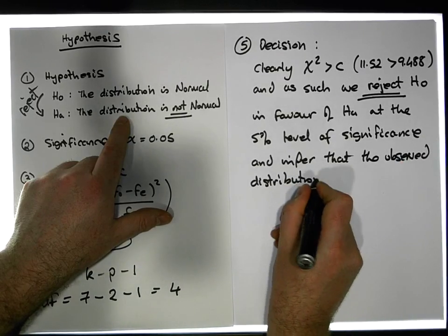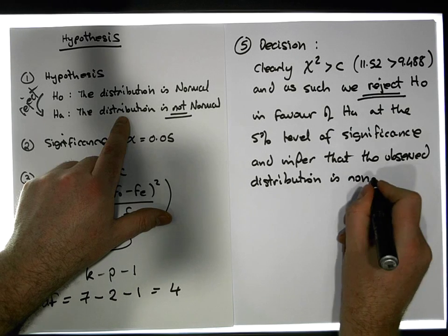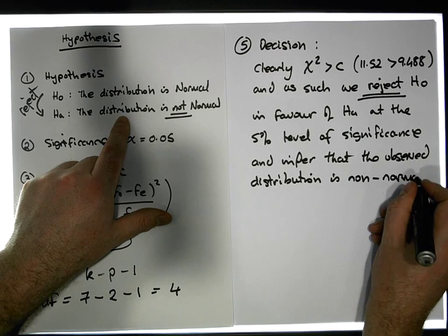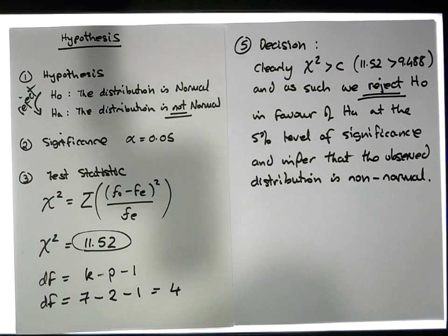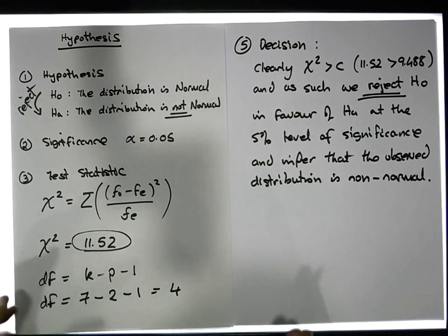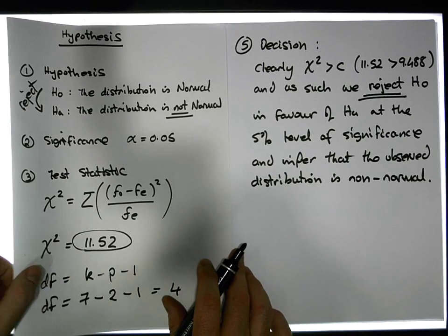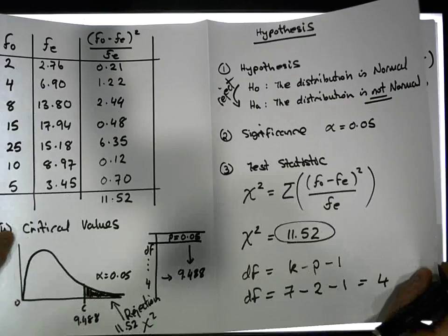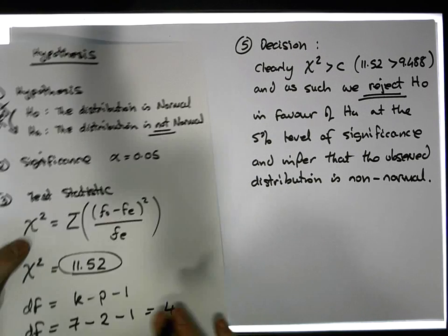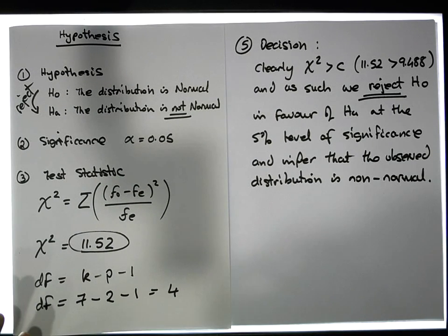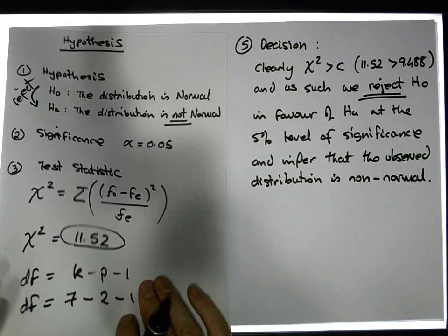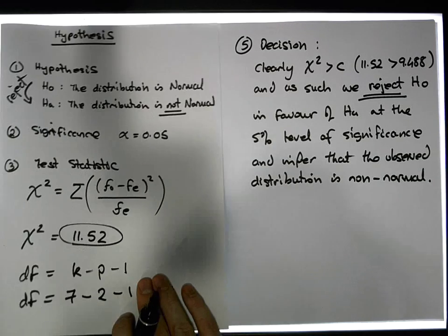This is what we've done here using the chi-squared goodness of fit test—we've shown that our observations are non-normal, that the distribution shape is not bell-shaped.